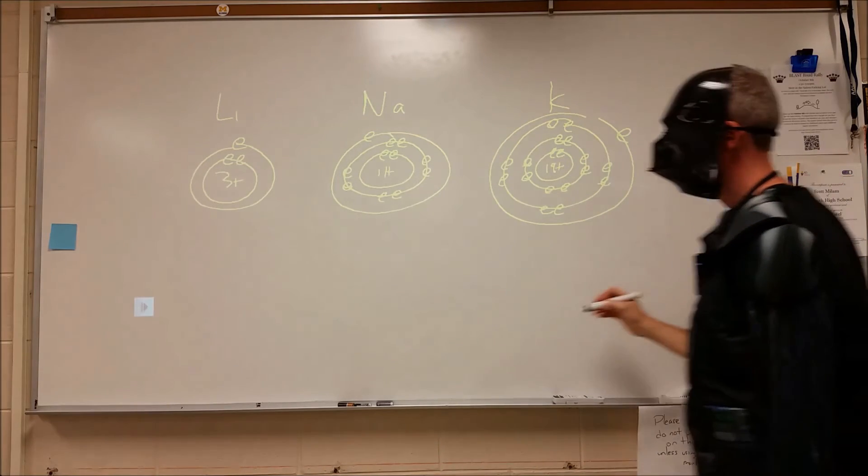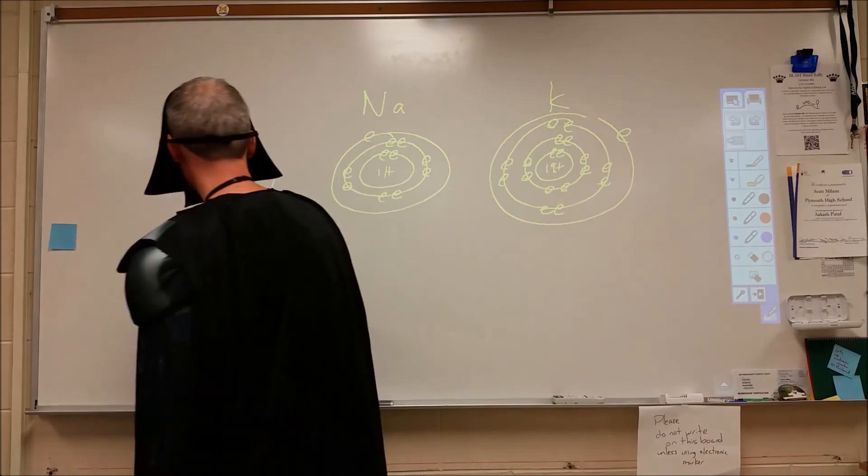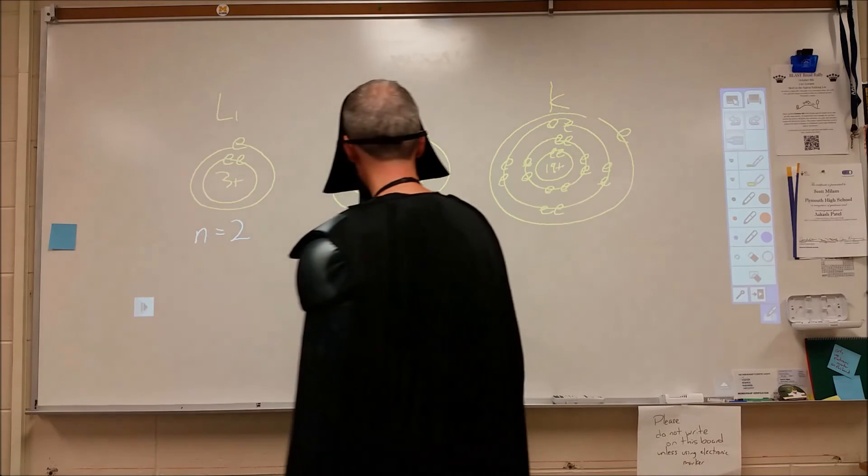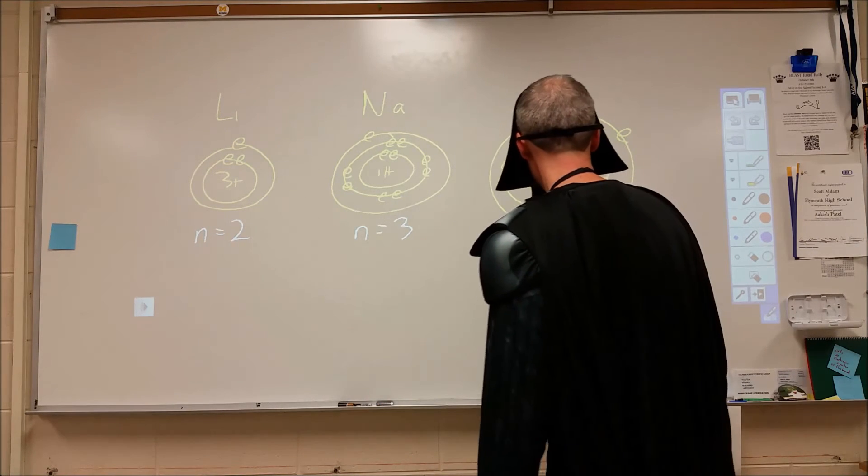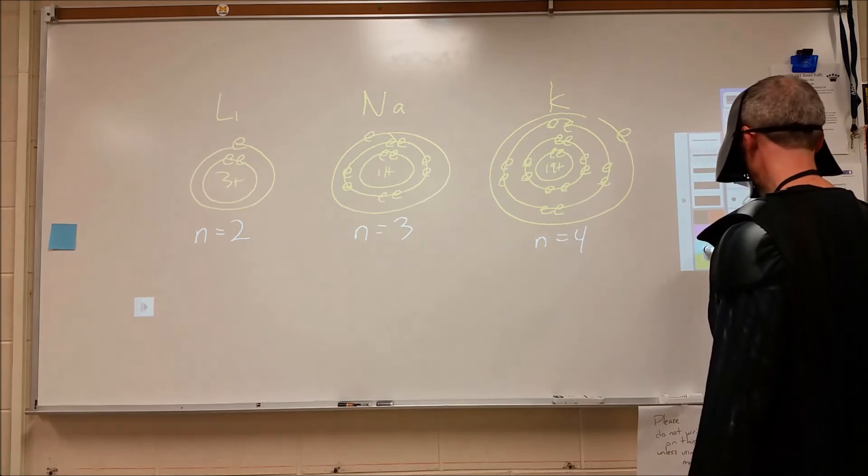So we do another comparison. In lithium, our valence electron is in the second energy level, in sodium it's in the third, potassium it's in the fourth, so we have some differentiation there.